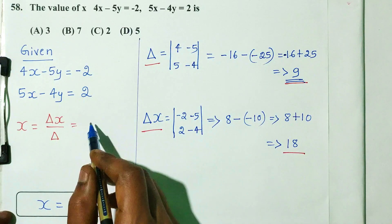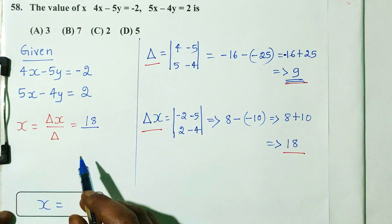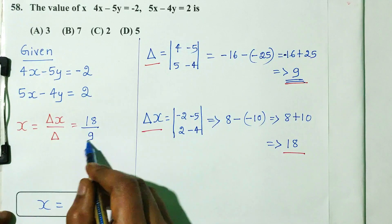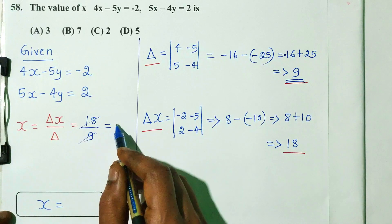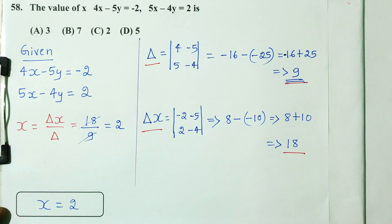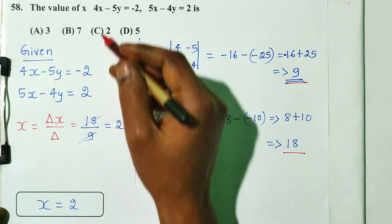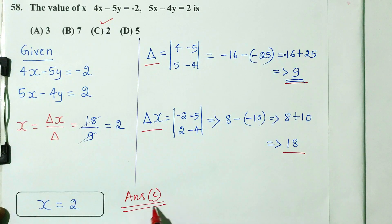After calculation, delta x gives 18, and delta is 9. So x equals 18 by 9 equals 2. Option C is the right answer.